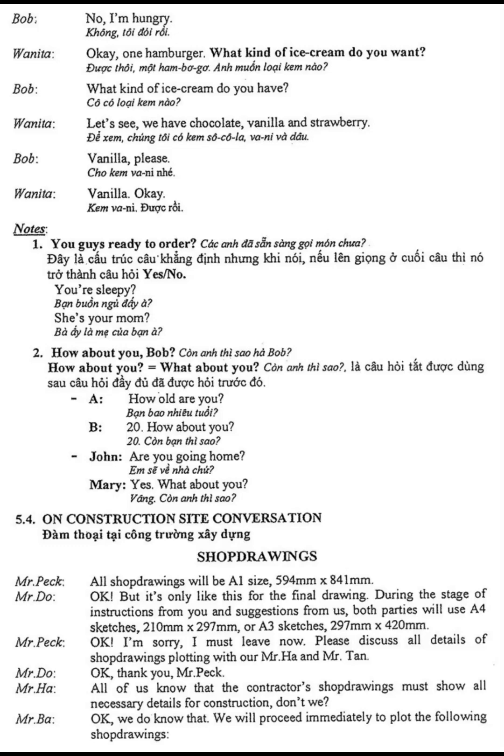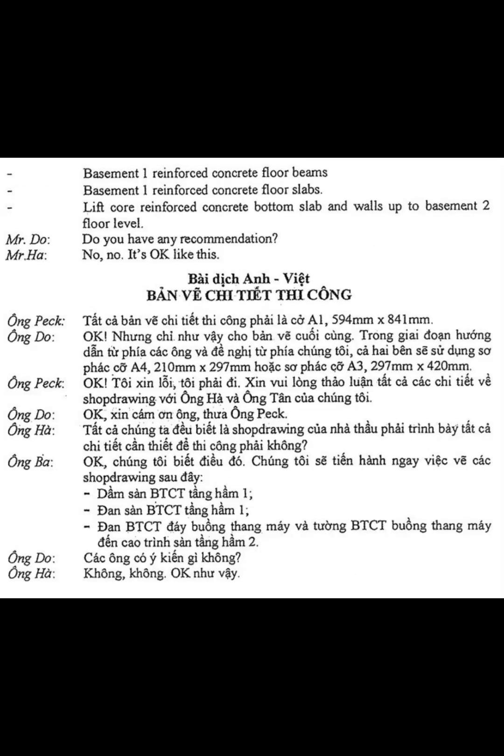Basement 1, reinforced concrete floor beams. Basement 1, reinforced concrete floor slabs. Lift core reinforced concrete bottom slab and walls up to basement 2 floor level. Do you have any recommendations? No. It's okay like this.